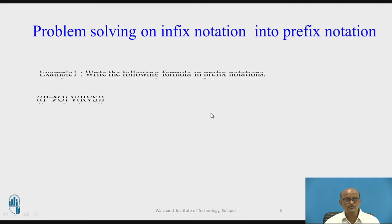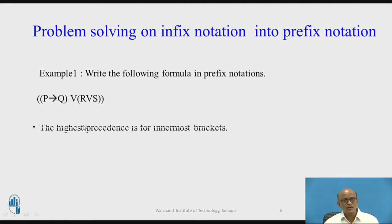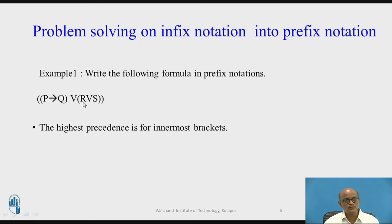Let us focus on problem one. The problem is Q AND (P conditional Q) OR (R OR S). Now brackets are there, so first of all brackets have the highest precedence. The innermost bracket is P conditional Q, and the second bracket is R OR S — both are at the same level.